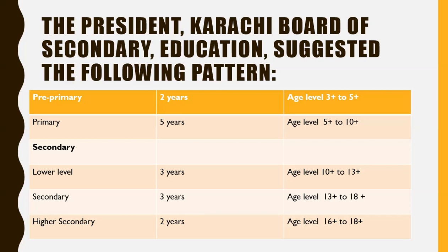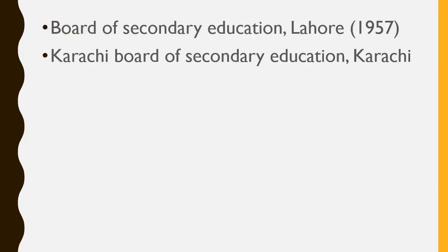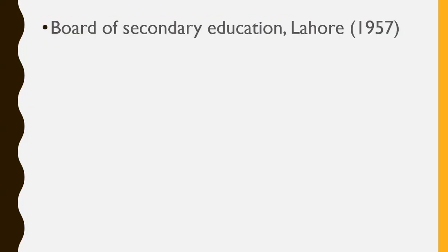Secondary education was structured as ten years total, with lower secondary for three years covering ages up to fifteen, secondary for three years, and higher secondary for two years covering ages up to eighteen.